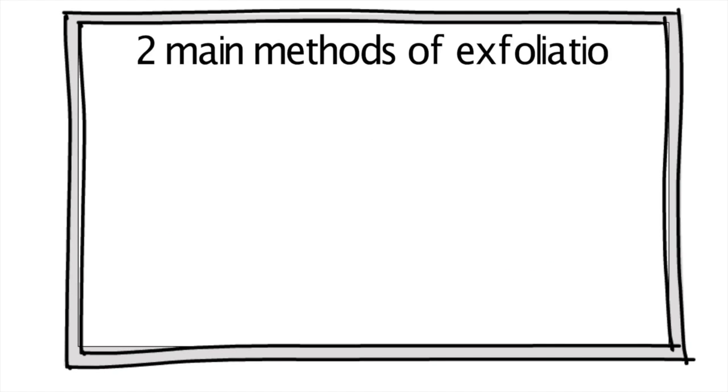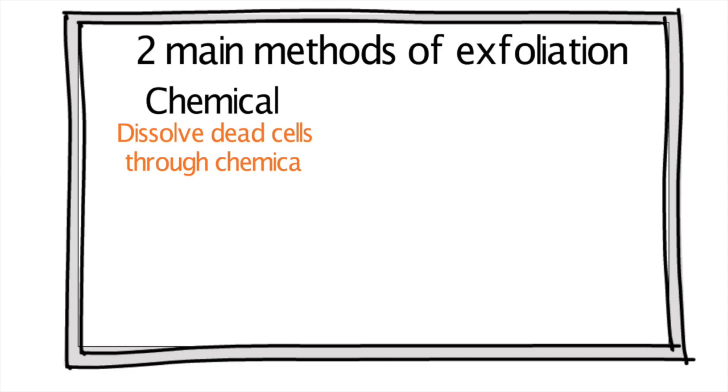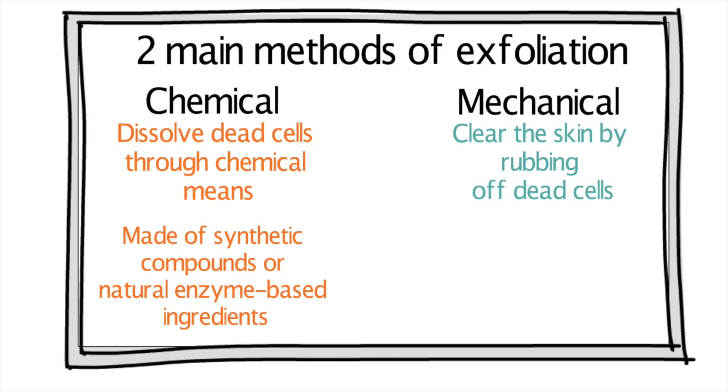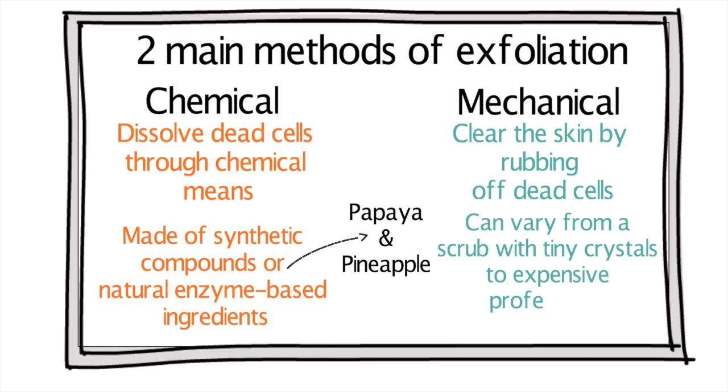When it comes to exfoliation, there are two main methods. Chemical exfoliators dissolve dead cells through chemical means. The mechanical methods clear the skin by rubbing off dead cells. Chemical exfoliators are made of synthetic compounds or natural enzyme-based ingredients from plants like papaya and pineapple. Mechanical methods can vary from a scrub with tiny crystals to expensive, professional microdermabrasion.